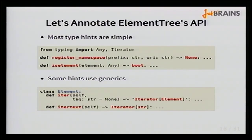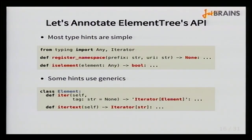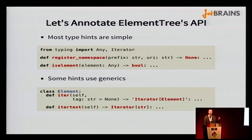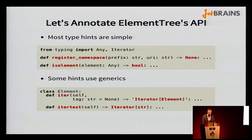Most type hints you'll write in practice are quite simple. For example, the register_namespace function accepts just two strings and returns nothing, so we annotate it with the return type None. The is_element function accepts any value and checks if it's an XML element, so we specify the parameter type as Any. Some type hints are more complex — the iter function returns an iterator over elements, using string quotation because we're referring to the class itself while still defining it. The itertext function returns an iterator over strings.